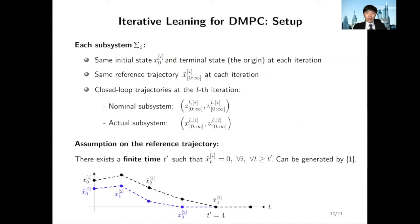One technical assumption is that we require a finite time instance T prime, after which the reference trajectory becomes zero for all subsequent time instances. This makes sense in practice because you want your system to converge to equilibrium. In this case, we assume it's the origin. This kind of reference trajectory can be generated by non-cooperative DMPC, which I mentioned a couple of slides ago.